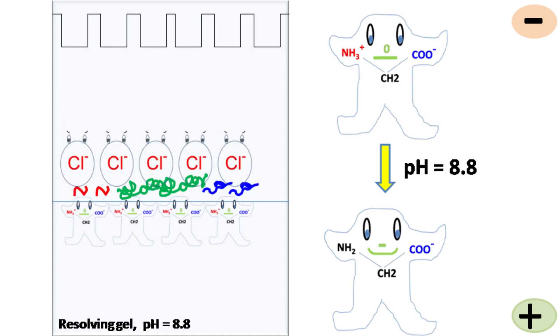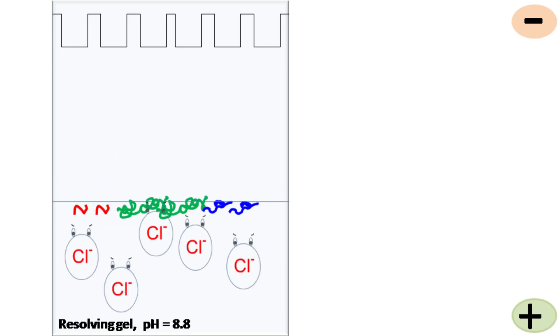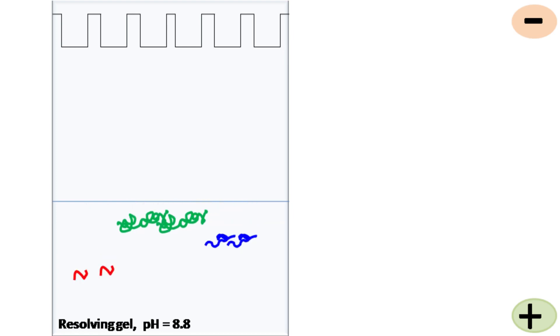The resolving gel has a pH of 8.8. So glycine is again going to have a net negative charge. So the sandwiching of proteins now stops as the glycine moves forward. So in the resolving gel, all the proteins start migrating from the same line, which can finally give a good resolution.